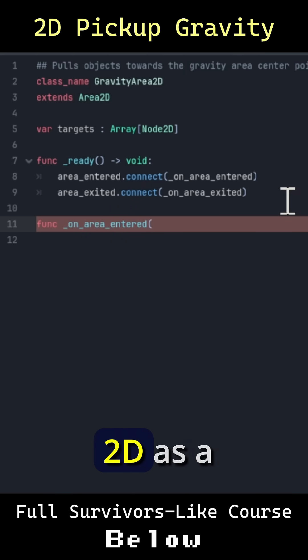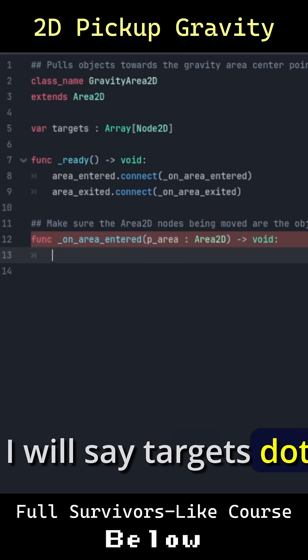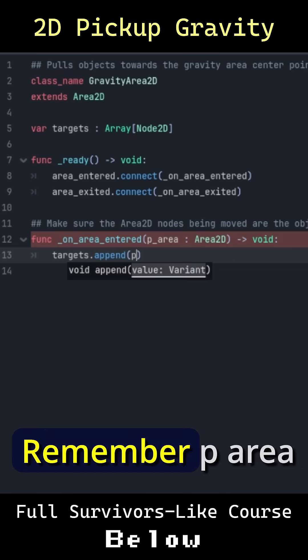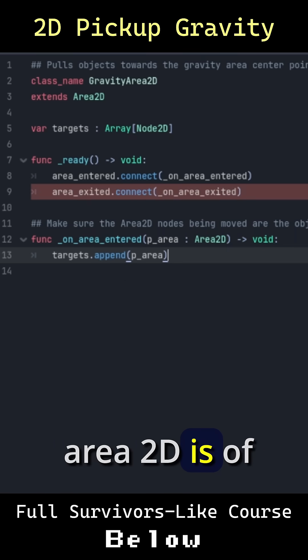And this is going to give us an Area2D as a parameter. So p_area: Area2D, I will say targets.append(p_area). Remember p_area Area2D is of type Node2D, so that works fine up here. There's no need to be more specific than that because we only need to access the Node2D functions.